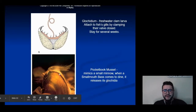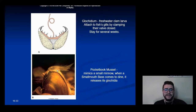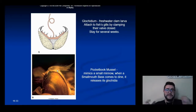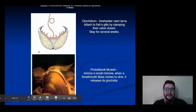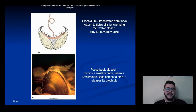Here's a pocketbook mussel, which is a freshwater bivalve. What it does is it has a little part of its body that mimics a small minnow. When a smallmouth bass comes along to dine on it, it releases the glochidia, which then attaches to the fish's gills. It'll live there for a few months as it develops and acts as a parasite until it develops into a fully-formed organism.